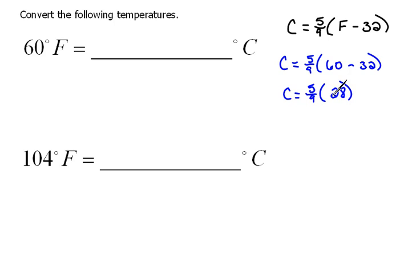And now you could do this different ways. You could do 5 divided by 9, and then multiply that to 28. Or you could do 5 times 28, and then divide all that by 9. It doesn't really matter, because now we're down to multiplication and division.